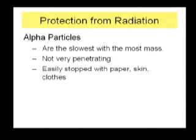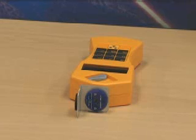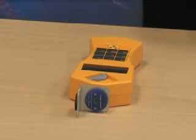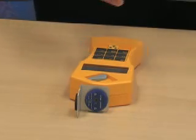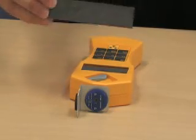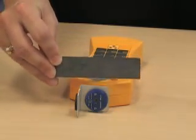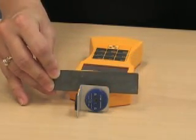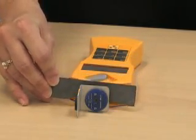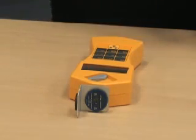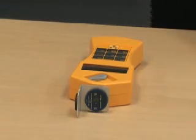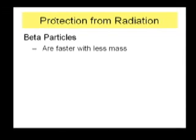Beta particles are much more penetrating and can be stopped by wood, heavy clothes, or lead. Here I have a thin piece of lead. What happens if I put that through here? The radiation has stopped — so this is a beta emitter.